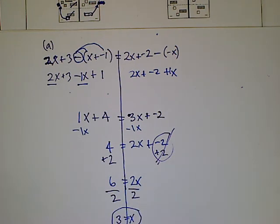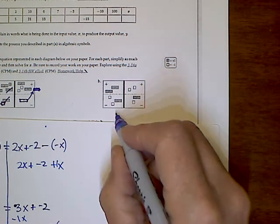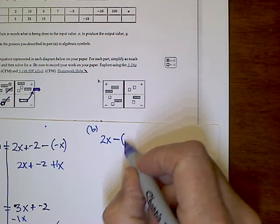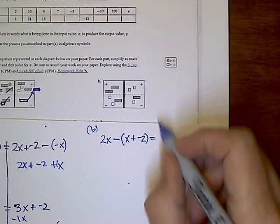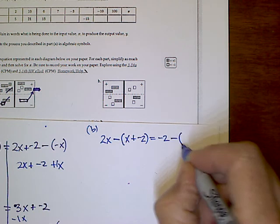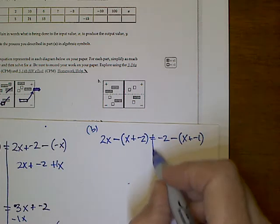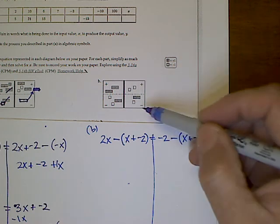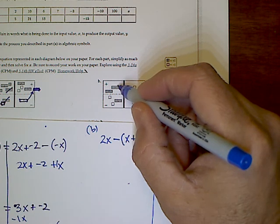Now for part B — same process. Writing the equation as-is from the mat: on the left I have positive 2x on top, and on the bottom minus the quantity (positive x plus negative two). On the right I have a negative two on top, minus the quantity (positive x plus negative one). We'll simplify from the mats and algebraically.